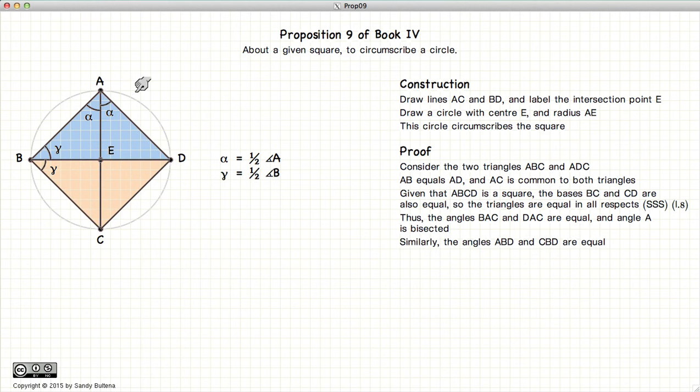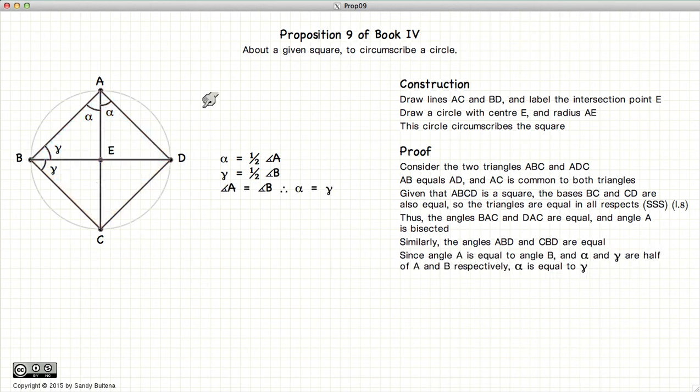Similarly we can show that the angle gamma is equal to half of the original angle at B. But since ABCD is a square, A and B are equal angled, so half of A and half of B will also be equal.